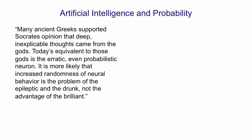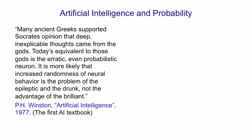I'll read it out: "Many ancient Greeks supported Socrates' opinion that deep, inexplicable thoughts came from the gods. Today's equivalent to those gods is the erratic, even probabilistic, neuron. It is more likely that increased randomness of neural behaviour is the problem of the epileptic and the drunk, not the advantage of the brilliant." That was in Patrick Henry Winston's first AI textbook in the first edition, and it was the general opinion at the time. Winston was to become the leader of the MIT AI lab.